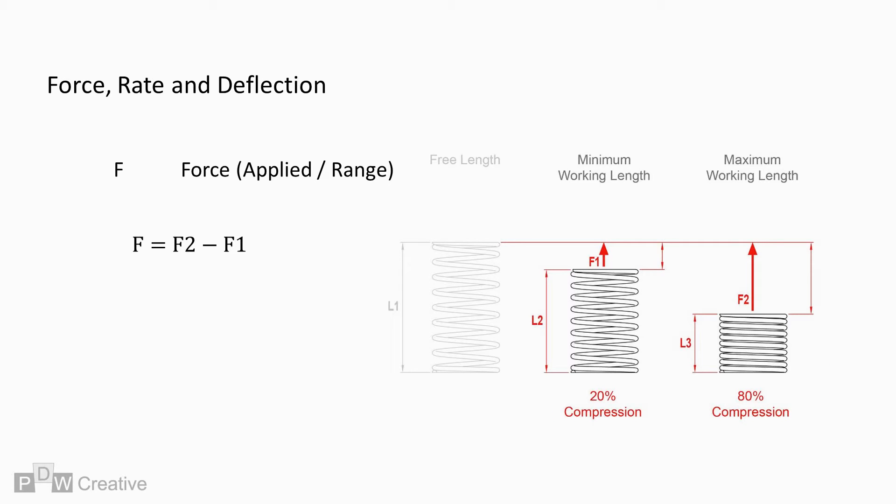Force can be looked at in terms of the applied load between working lengths. If we know both, we can deduct one from the other to find the range. So F2 minus F1 will find us the range, and in this case, we come up with a force of 8.72 N.